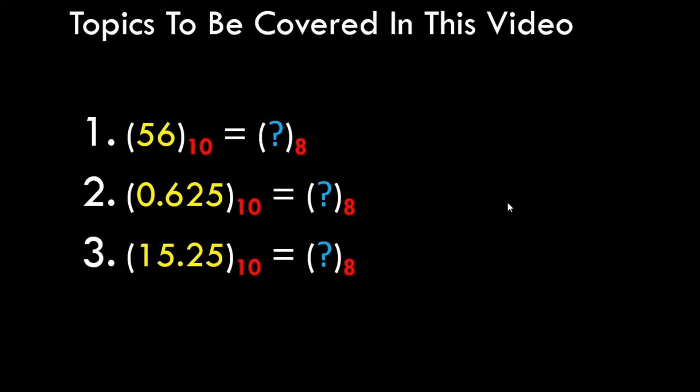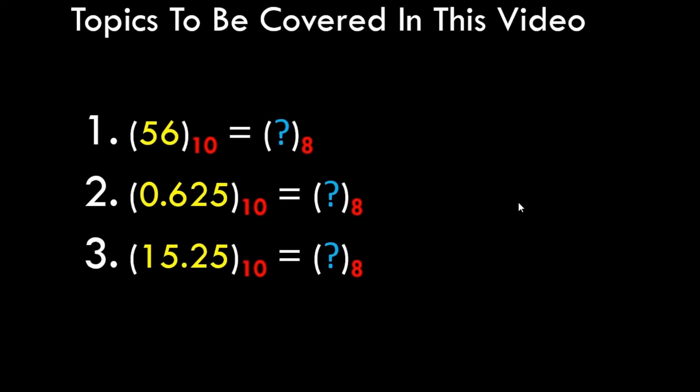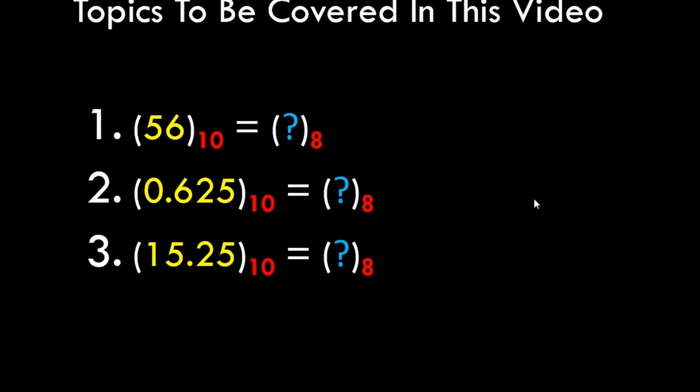Now all three numbers are of different types: the first one is a plain simple integer value, the second one is a fraction, and the third one is a combination of both. So let's get started with the first sum.